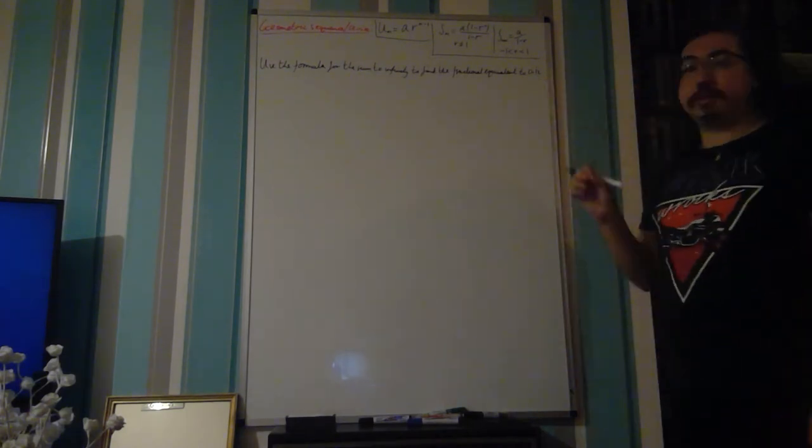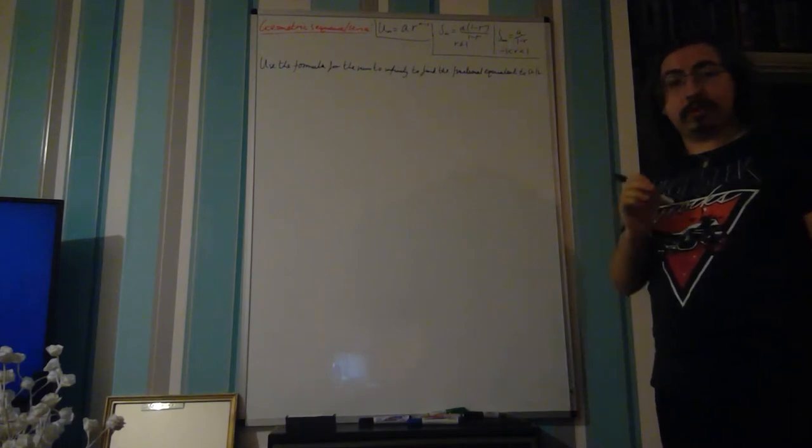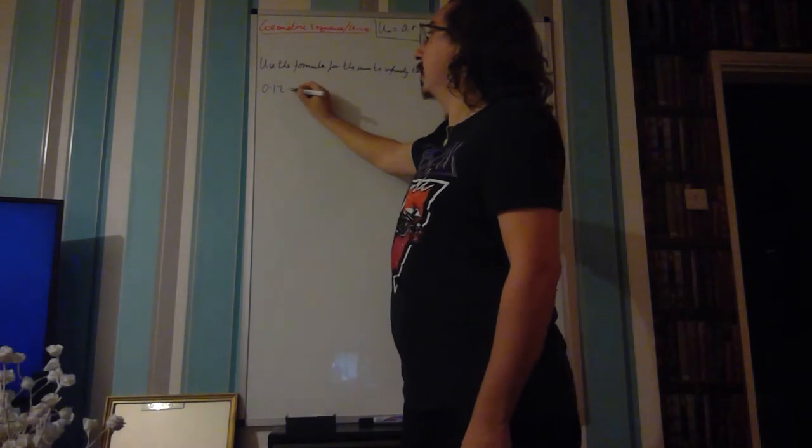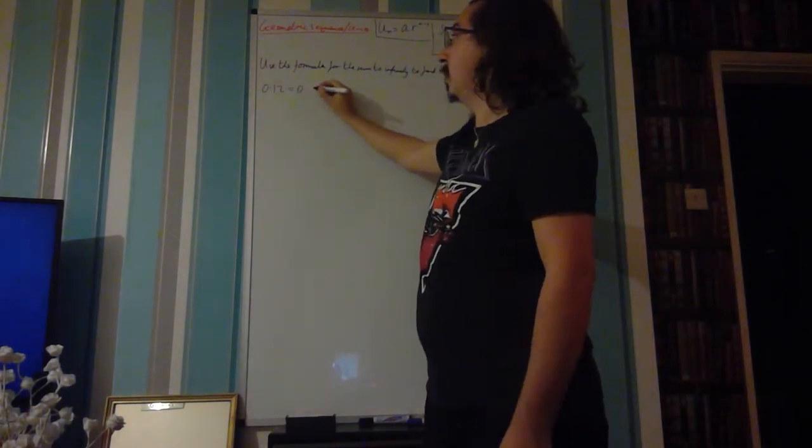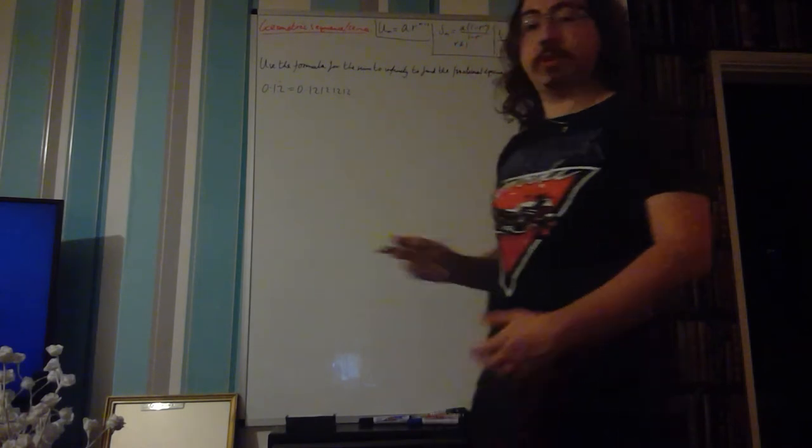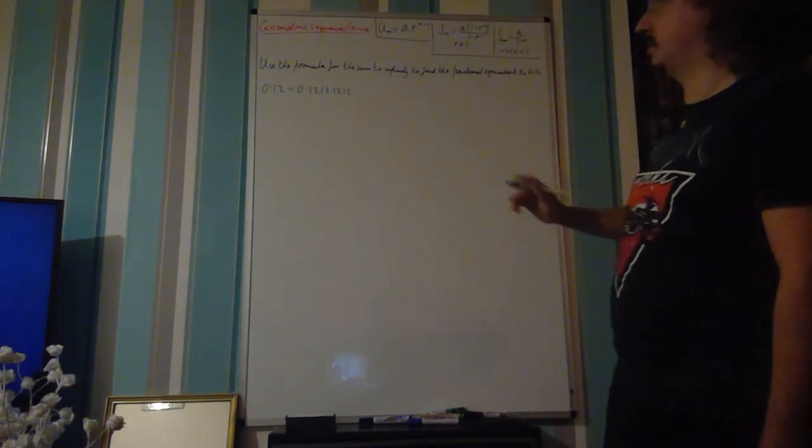Let's look at what 0.12 recurring actually means. We've got 0.12 recurring, which really just means 0.12121212 and so on forever. It's a recurring decimal.